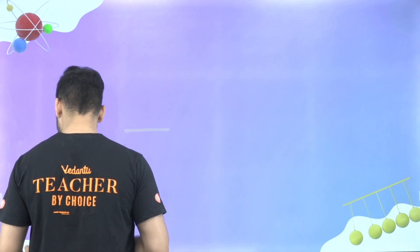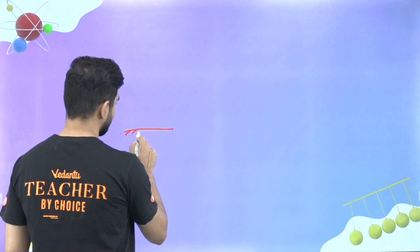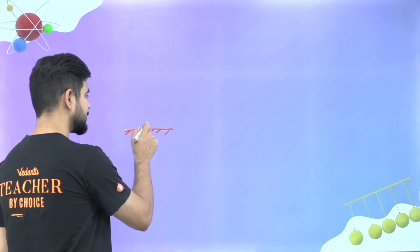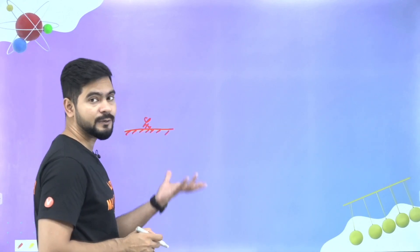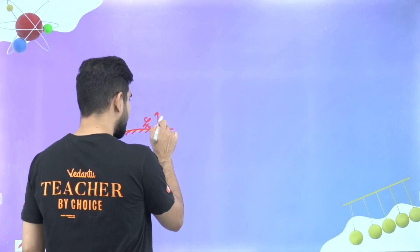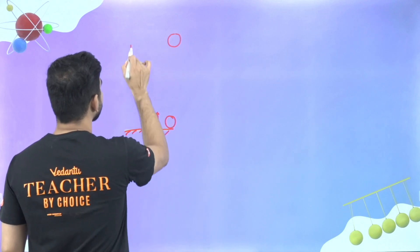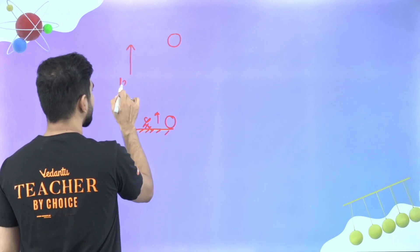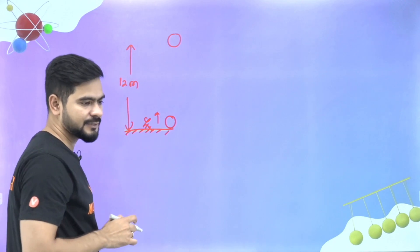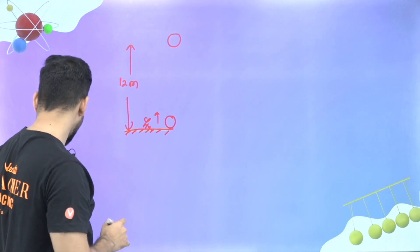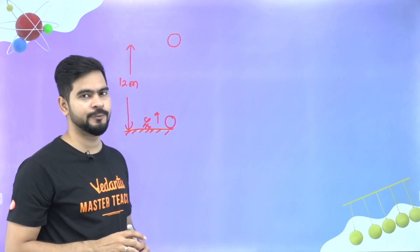Suppose here, we have this surface. And there is a person, he's throwing the ball in the upper direction. So when he throws the ball to the top, this ball is covering a maximum height of 12 meter. This is the kinematics problem. The ball is going in the upper direction with maximum height of 12 meter.